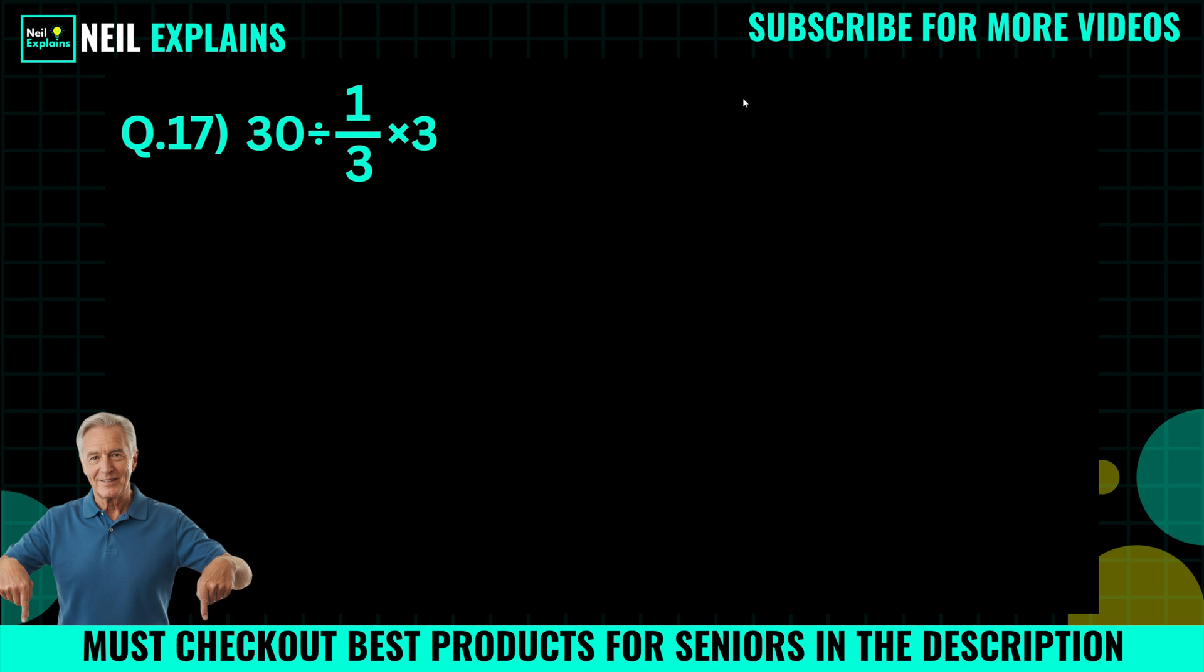Hello everyone and welcome back to Neil Explains. Today we have question number 17: 30 divided by 1/3 times 3. Try to solve on your own and comment your answer whatever it will be.